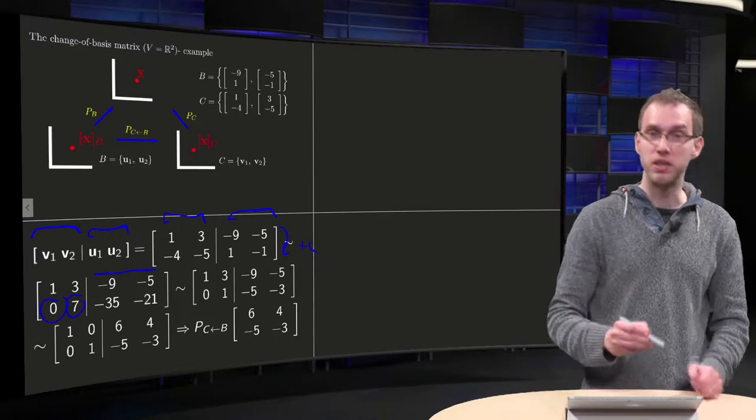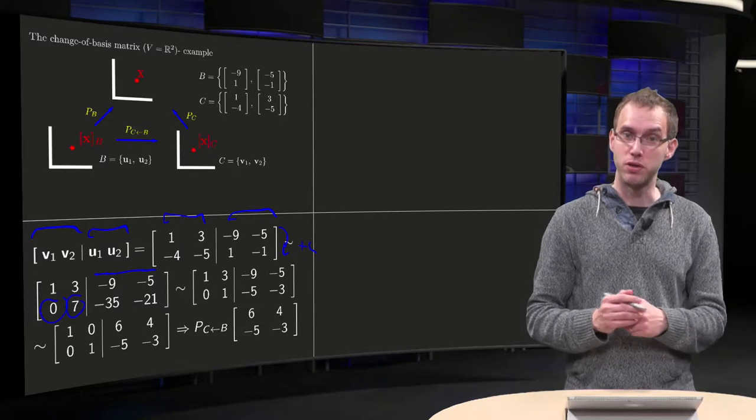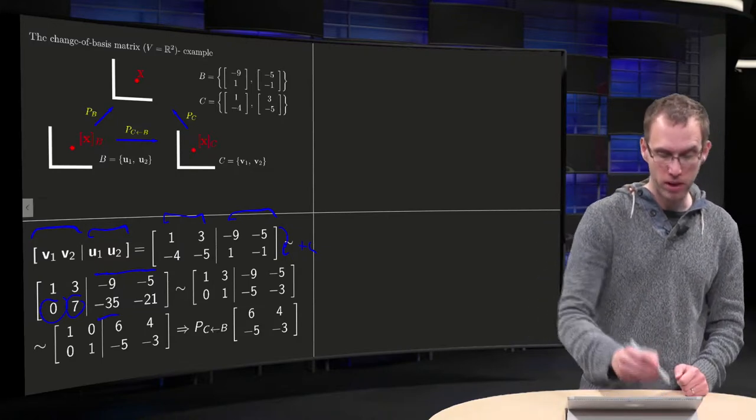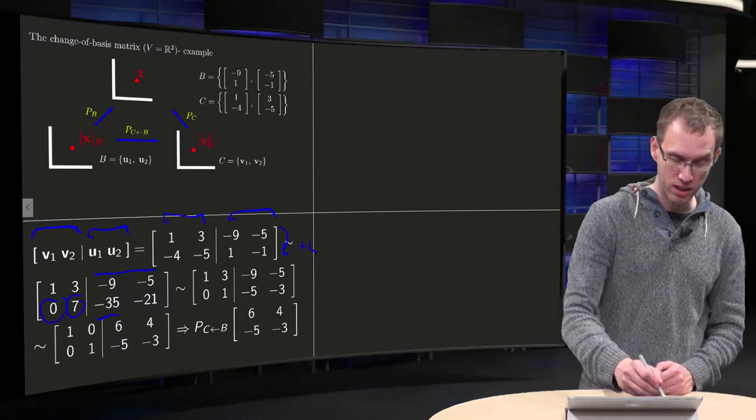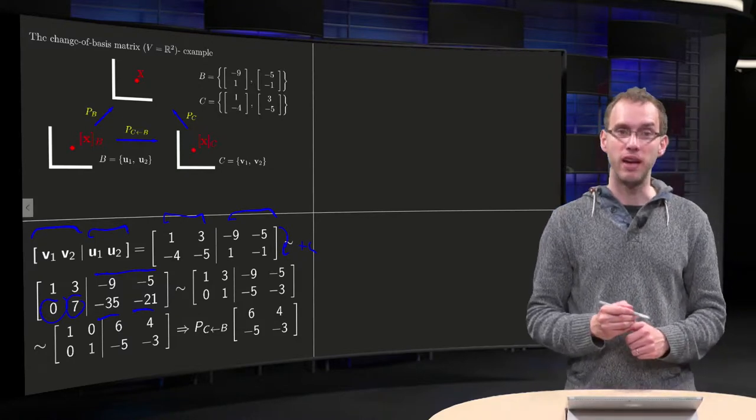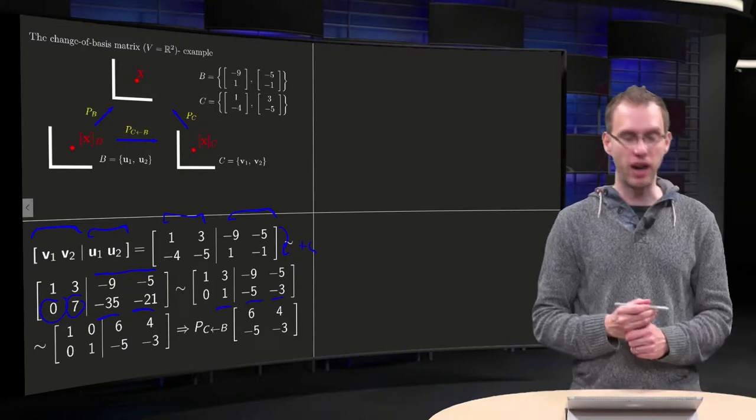The first row here remains the same, added 4 times to the second row. 4 times minus 9 equals minus 32, so gives a minus 35. 4 times minus 5 equals minus 20, gives a minus 21. Then of course we divide by 7 to get a 1 over here, and a minus 5 and a minus 3 over there.